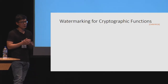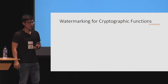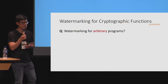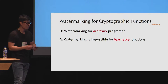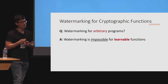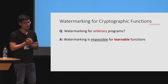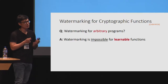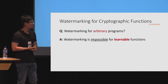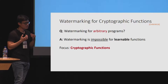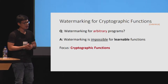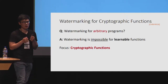The first question we should ask is: what type of programs can we actually watermark? Can we construct a watermarking scheme that works over arbitrary programs and still satisfy functionality-preserving and unremovability? It turns out the answer is no. The work of COINETEL in 2016 showed that watermarking is actually impossible for a large class of programs, specifically programs that implement learnable functions — functions whose canonical representation can be easily deduced from the input and output behavior of the functions.